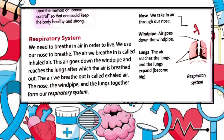Next is the respiratory system. The organs and structures of the respiratory system include the lungs and lung tubes, which carry air between the lungs and other organs. The main function of the respiratory system is to deliver oxygen to the blood and remove carbon dioxide from the body. Gases are exchanged between the lungs and blood across the walls of capillaries and arteries, which are blood vessels.